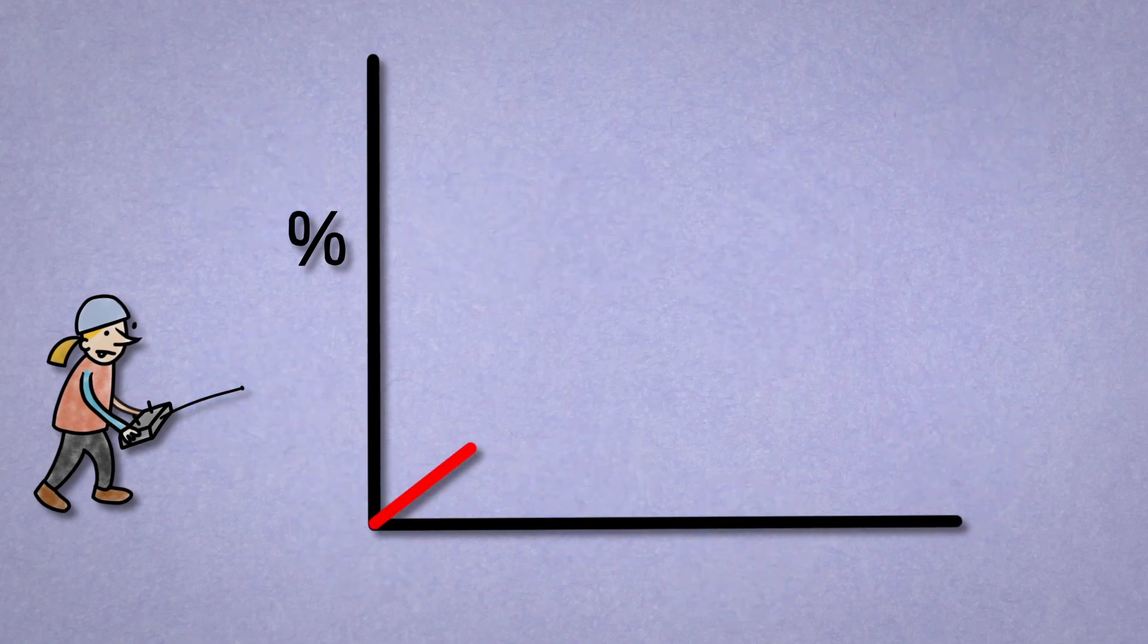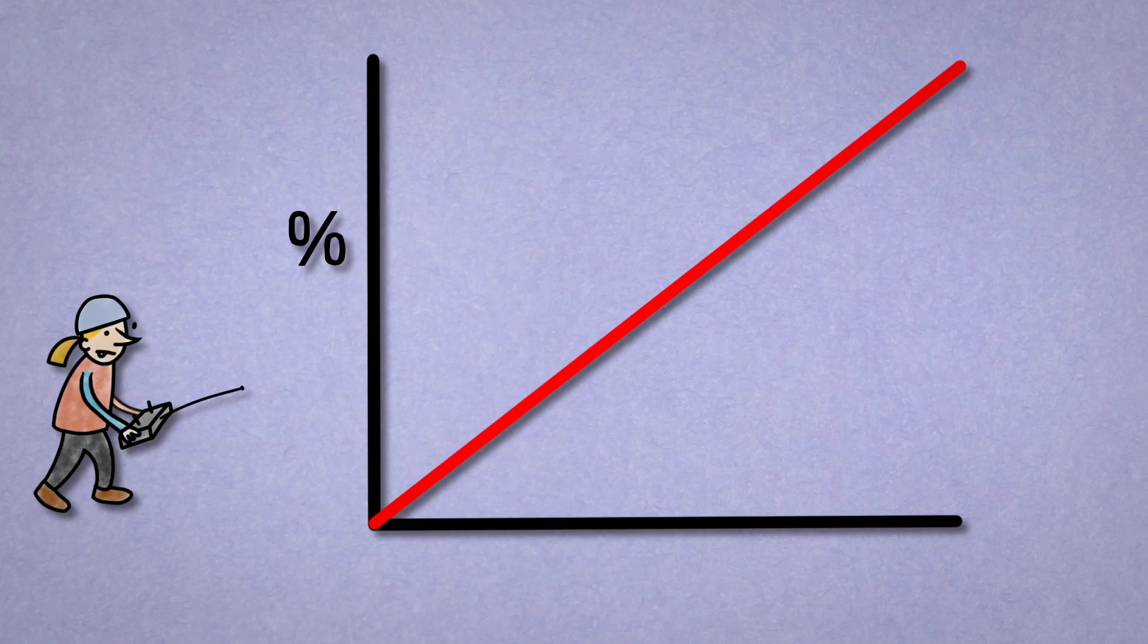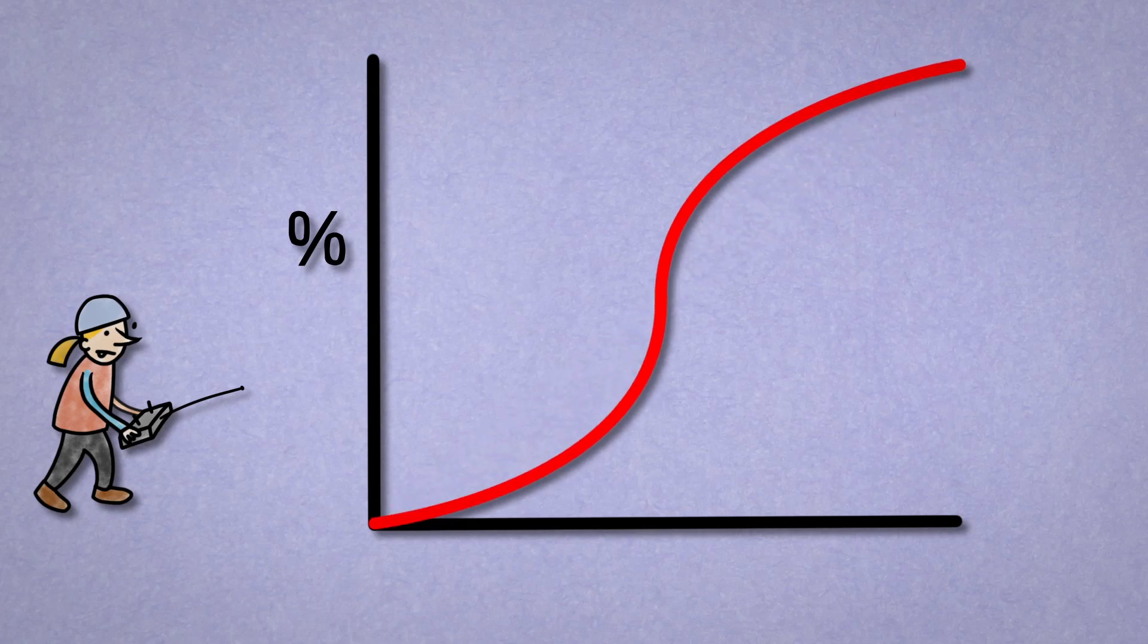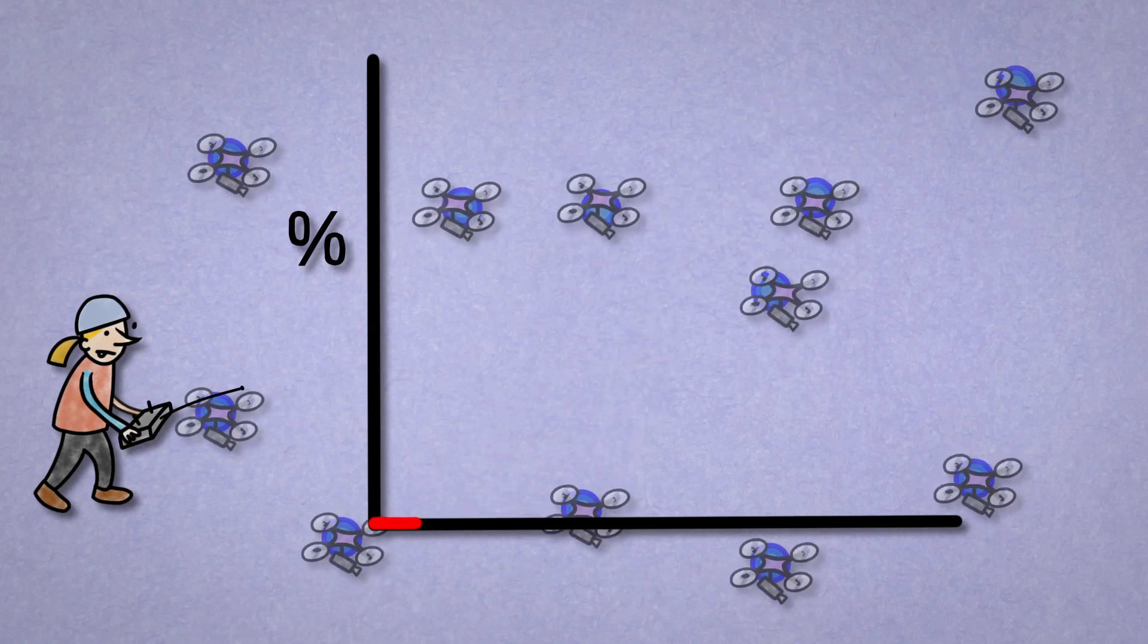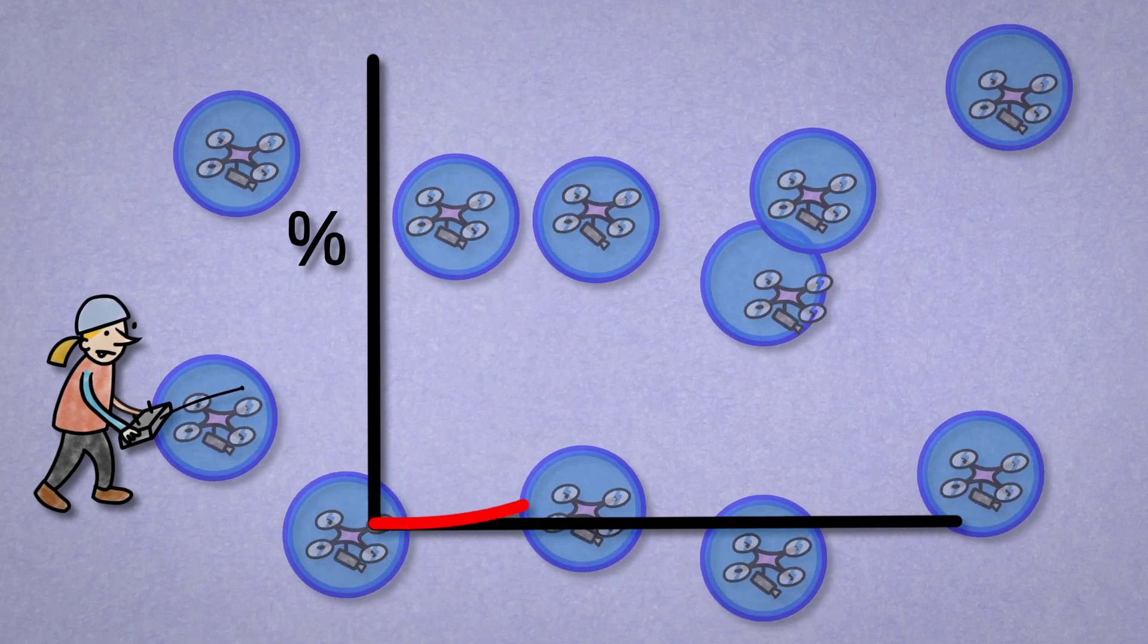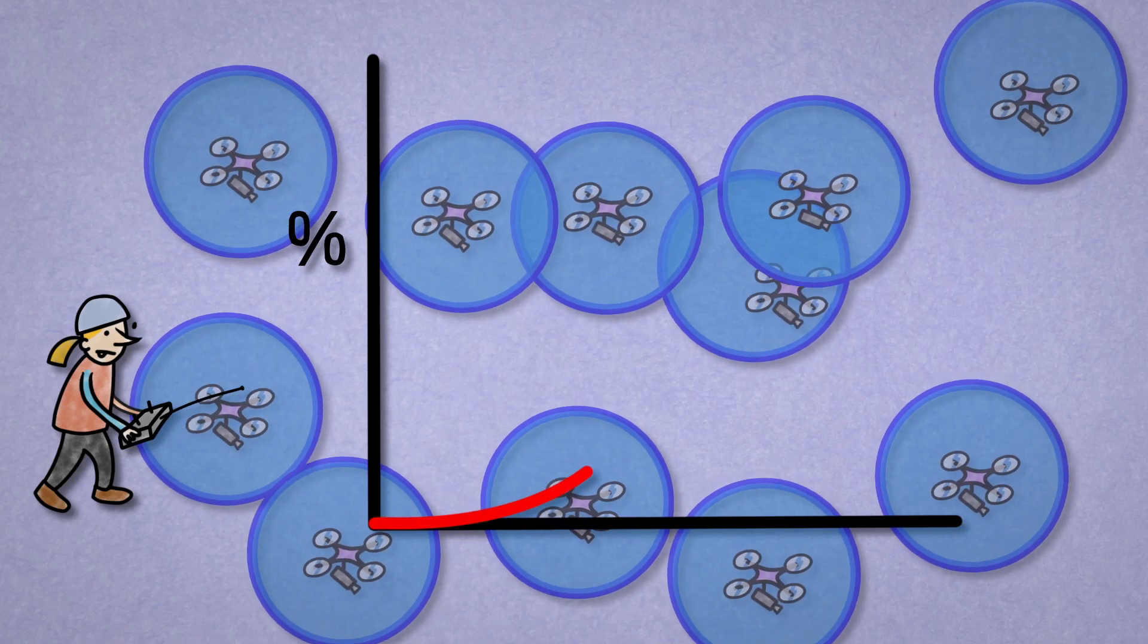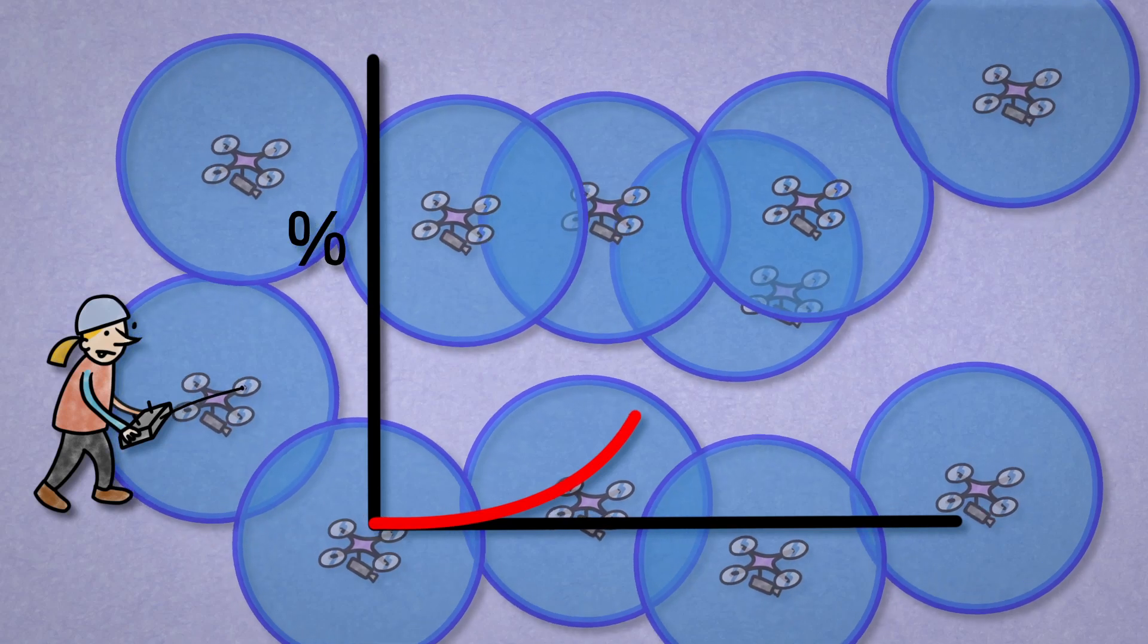When the range increases, the chances of full coverage don't grow proportionally. Instead, there is a tipping point. When you start with a low range, increasing range doesn't do much in the beginning. The signal doesn't come through, because there is no link between both sides of the network.